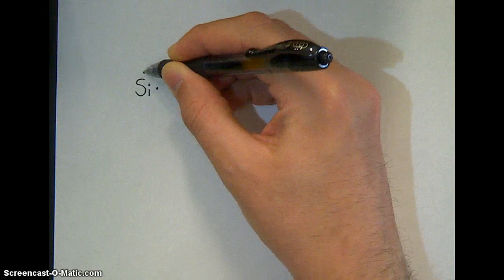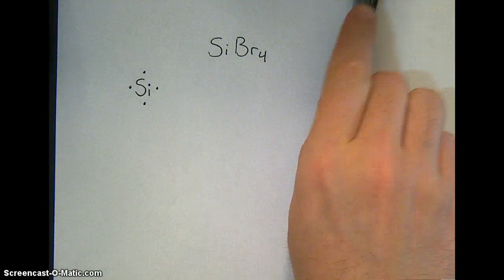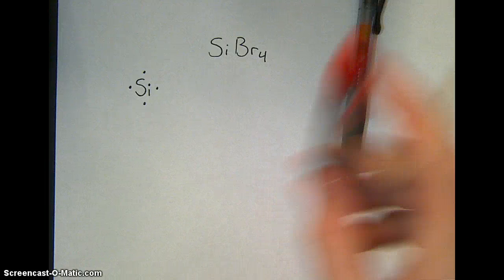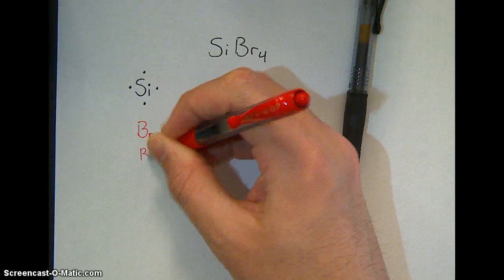Silicon's in group four, so it has four valence electrons, four little singles like this. Bromine's in group seven, so it's going to get seven electrons. And I have four bromines, so I'm going to draw it out four times.